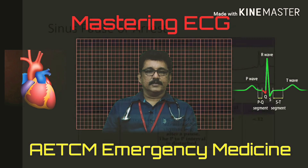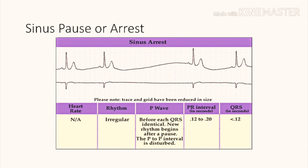In this ECG, the first and second complexes are normal. In the third and fourth positions, there is no P-wave and no QRS complex — the atria, junction, and ventricle are all not generating electrical impulses, resulting in a long pause. This is called sinus pause or sinus arrest, a dangerous condition in which the patient can develop sudden death.